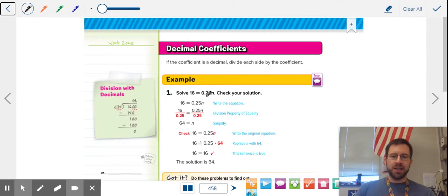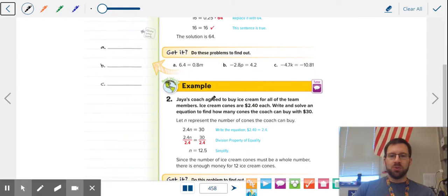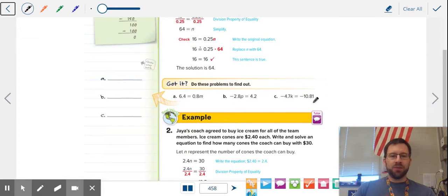As you see here, we have a 0.25n instead of like say 5n, or we have negative 2.8, negative 4.7. All right, so first look at all these.